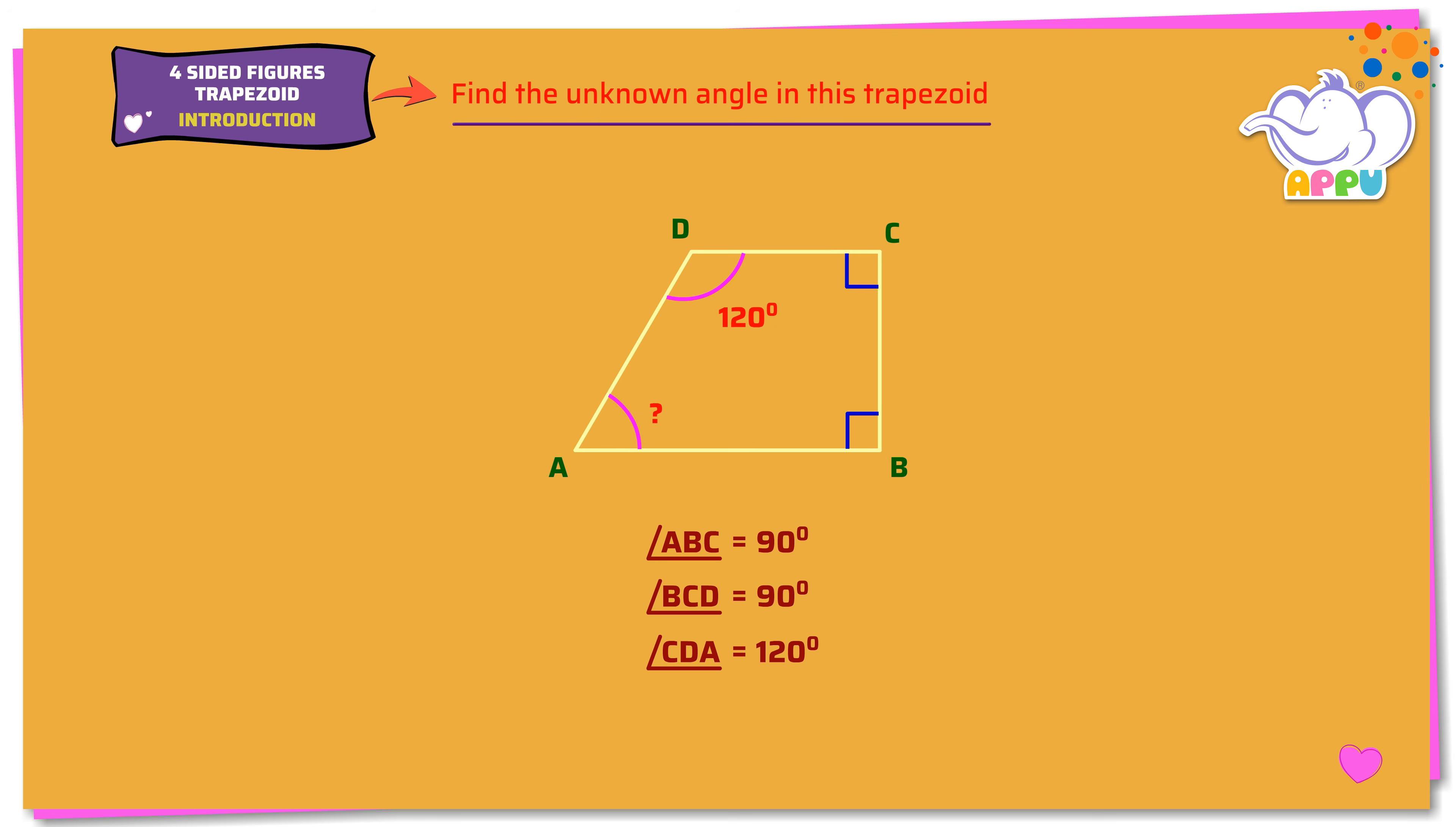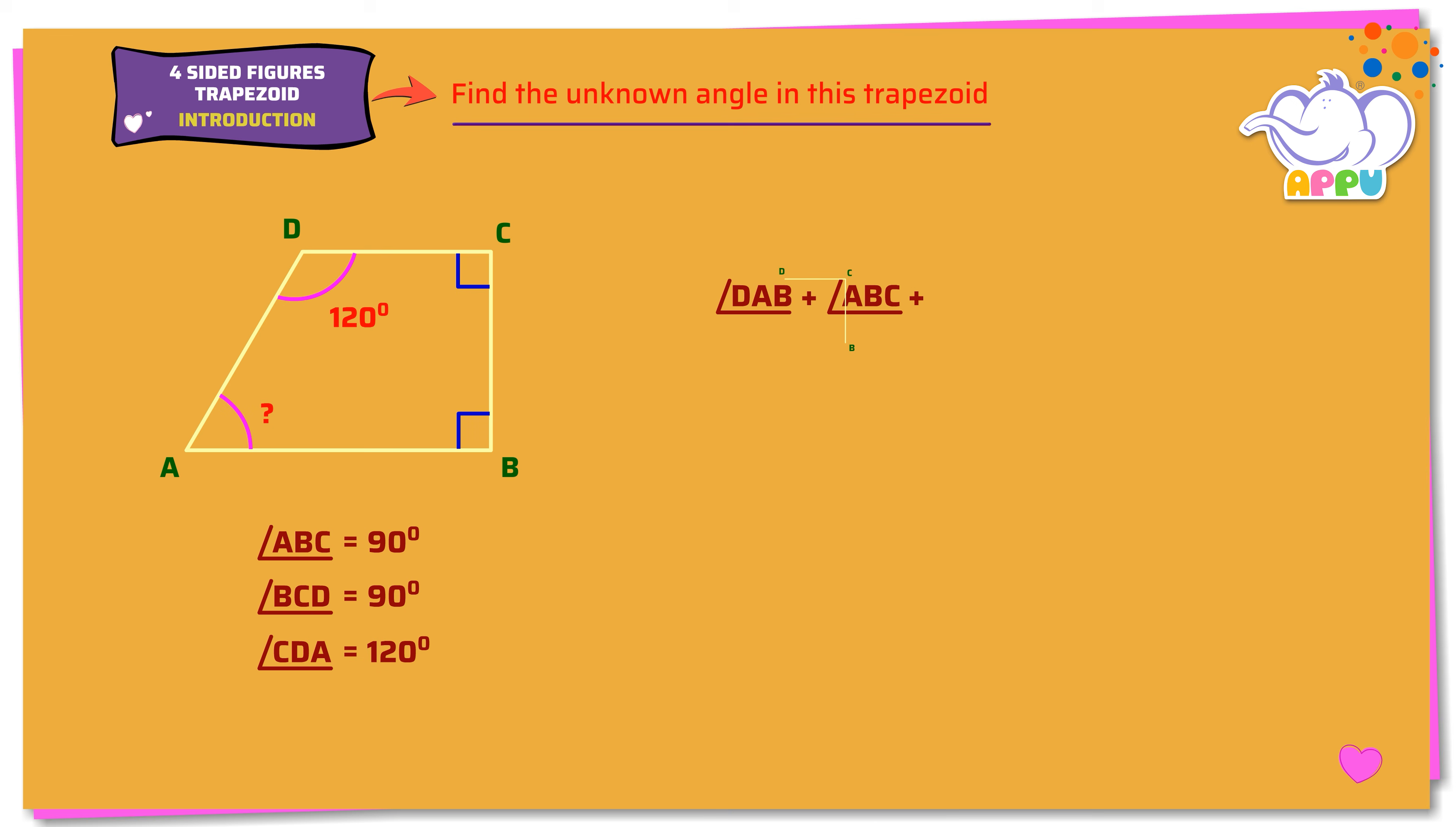We need to find angle DAB. Note that a perpendicular symbol is used to denote 90 degrees. Let's find angle DAB. We know that the sum of all angles of a trapezoid adds up to 360 degrees. Angle DAB plus angle ABC plus angle BCD plus angle CDA equals 360 degrees.